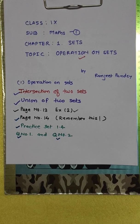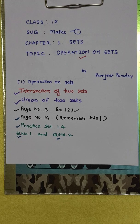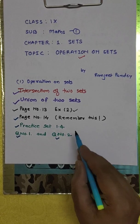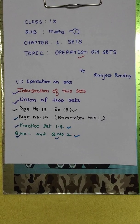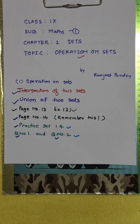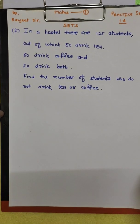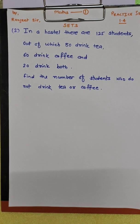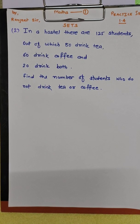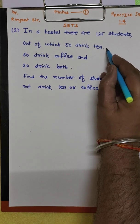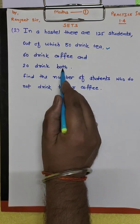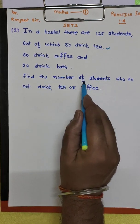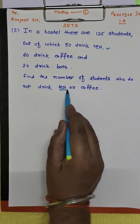Hello students, I am Ranjit sir. Today we are going to study question number 2 of practice set 1.4. Question number 2 is: in a hostel there are 125 students, out of which 80 drink tea, 60 drink coffee, and 20 drink both. Find the number of students who do not drink tea or coffee.